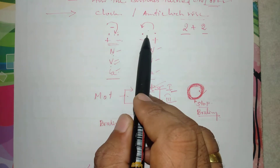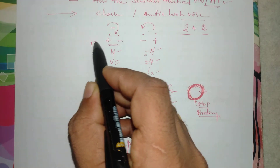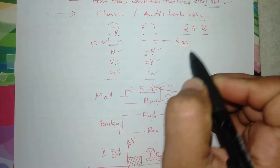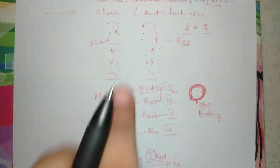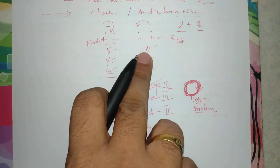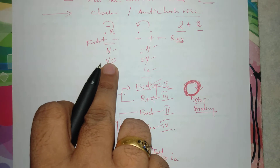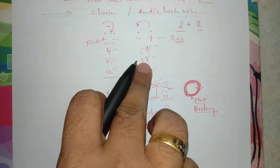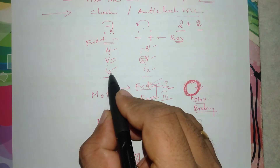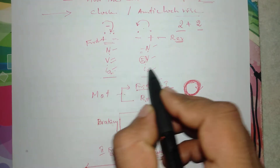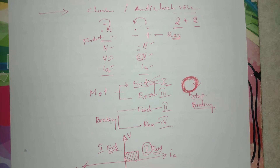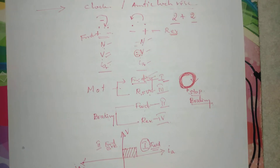In the forward direction, speed n is positive; in reverse, speed is minus n. Similarly, in forward direction voltage is positive; in reverse, voltage is in the opposite direction. The armature current Ia flows into the machine in forward direction and reversely in the reverse direction. These are the basic terminal identifications needed before going into forward and reverse motoring.